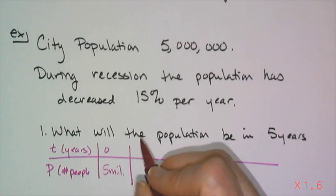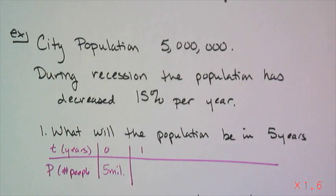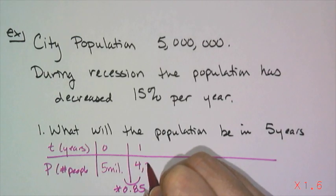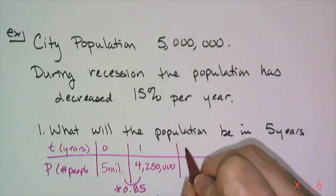At year one, how do I figure out how many people there were? Well, I know 15% of the people left, so that means 85% of the people stayed. Instead of taking the five million and finding 15% of it and subtracting off the 15%, I am just going to figure out how many people are left over by multiplying by 0.85. If I do, I get 4,250,000 people.